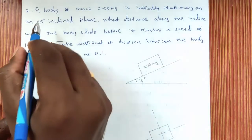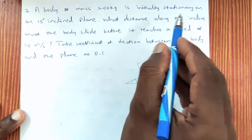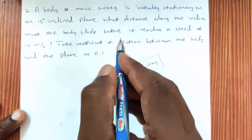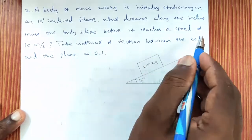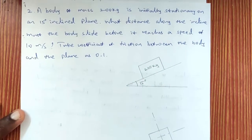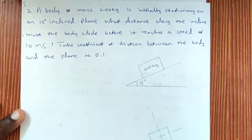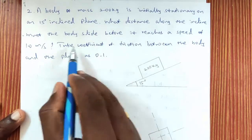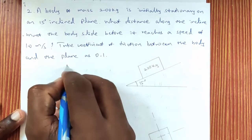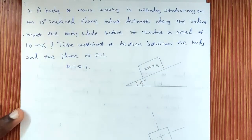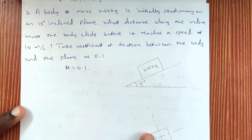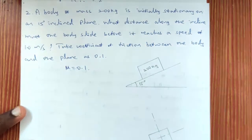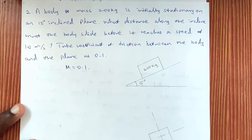The second problem: a body of mass 200 kg is initially stationary on a 15° inclined plane. What distance along the incline must the body slide before it reaches a speed of 10 m/s? The coefficient of friction between the body and the plane is μ = 0.1. To find the distance, we first need to calculate the acceleration.